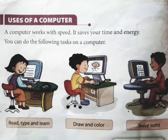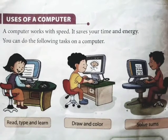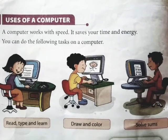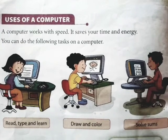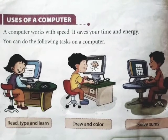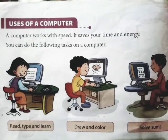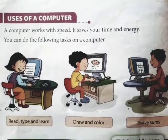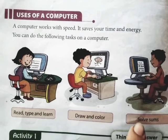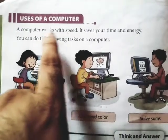Remember these things: you can read, type, and learn on a computer. You can draw and color on a computer. You can solve sums using a computer. Write down all these three uses in your notebook three times — read, type, and learn; draw and color; solve sums. And give the heading: Uses of Computer.